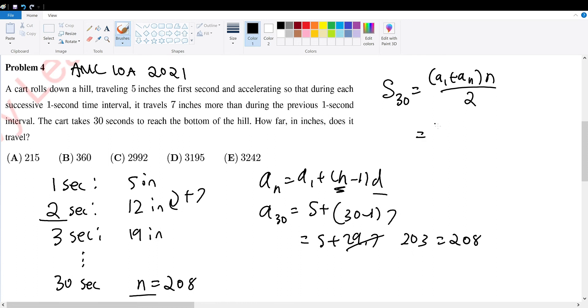So therefore, this will be equal to a_1, which is 5, plus a_n or a_30, which would be 208, times the n, which is 30, divided by 2. So we don't have to divide 2 yet, because that would be much more work. So 208 plus 5, that gives 213 times 30, divided by 2.